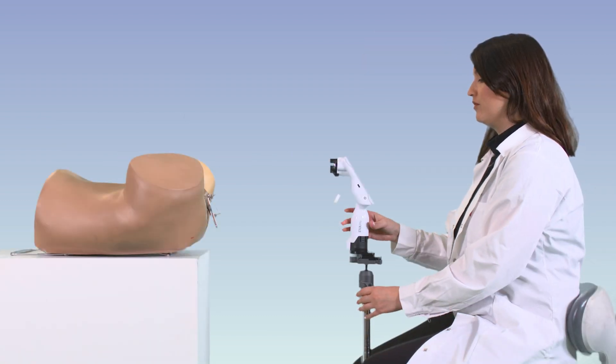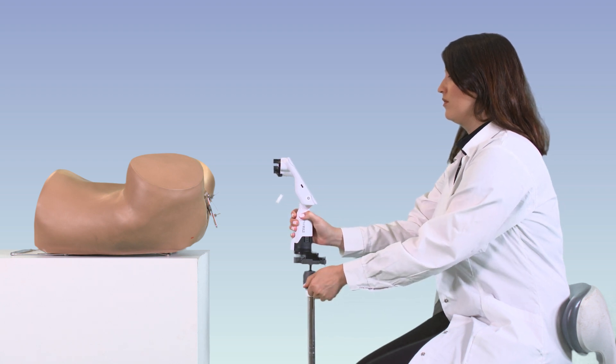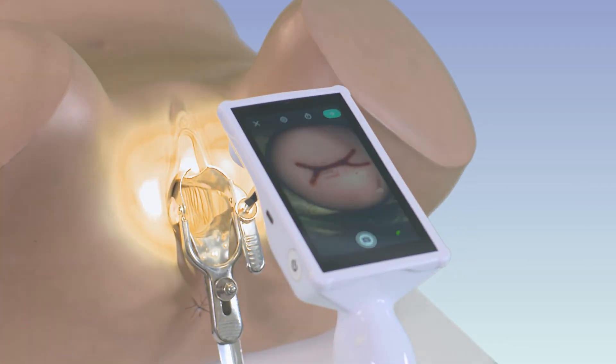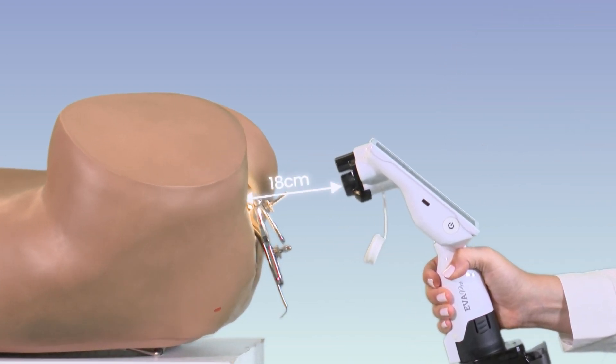For optimal image quality, make sure the colposcope is stable on the stand. Move the stand close to the patient and adjust the position of the device to obtain optimal visibility of the cervix. The recommended distance of the colposcope camera lens should be about 18 centimeters from the patient's cervix.